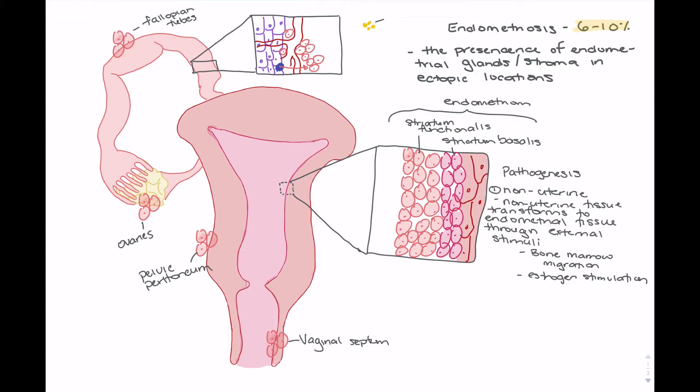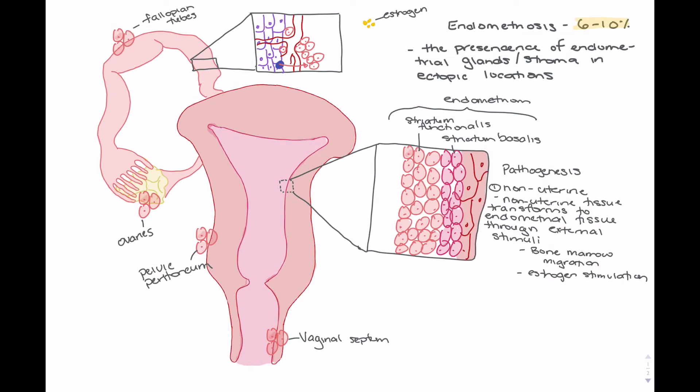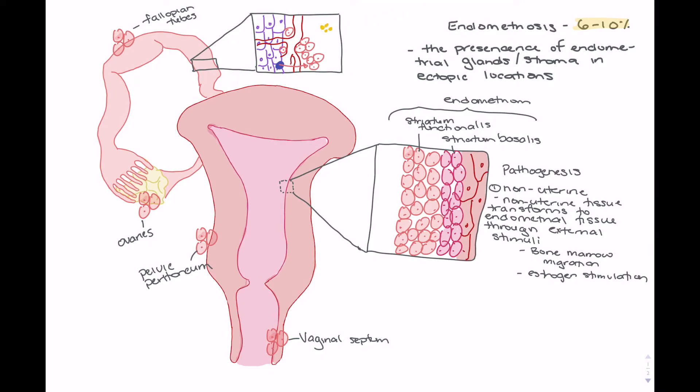The second is estrogen stimulation, so these yellow dots here will be estrogen. This theory posits that the stimulation of estrogen of our fallopian tube cells are going to lead to differentiation into endometrial cells. So excessive stimulation by estrogen may potentially lead to the formation of endometrial cells.